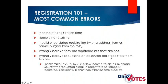Most common registration errors include incomplete registration forms, illegible handwriting, invalid or outdated registration (which includes having the wrong address, a former name, or being purged from the rolls), and wrongly believing they are registered but they are not. A lot of people will say they're registered, but when you actually look it up, their registration's at an old address or they're not actually registered. That happens quite frequently, so even if someone's confident, it is best practice to just check anyway.